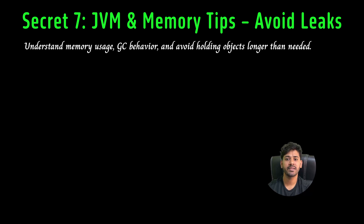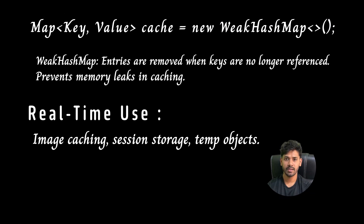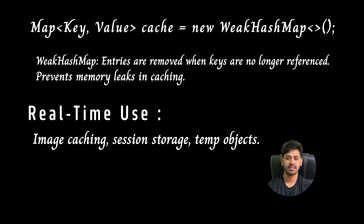Secret seven: JVM and memory tips to avoid leaks. Understand memory usage, GC behavior, and avoid holding objects longer than needed. For example, use a WeakHashMap for caches — entries are removed when keys are no longer referenced, preventing memory leaks. Real-life uses include image caching, session storage, and temporary objects.